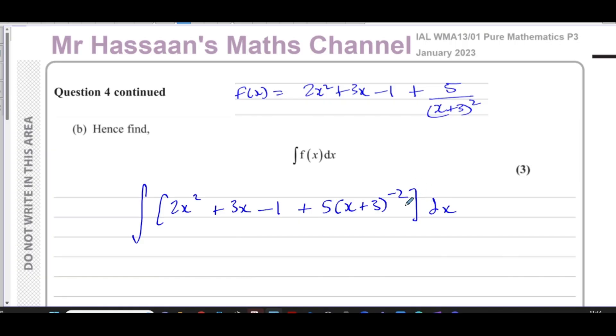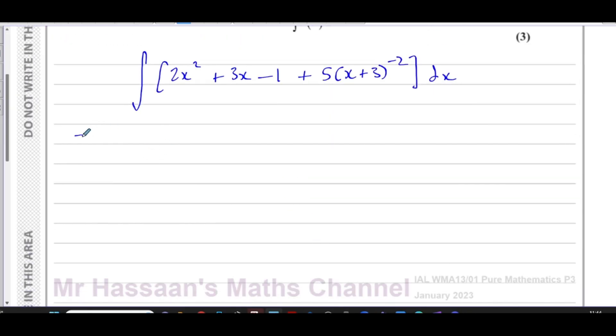Now all of these terms I can integrate. This last term can be integrated by reversing the chain rule because outside the function is something which is a constant and the differential of what's inside the function is also a constant, therefore the chain rule can be reversed. So now I'm going to integrate it. I'm going to add one to the power and divide by the new power. Same with this one. The number term will gain an x so it'll be minus x. And here I'm going to add one to the power so I have (x plus 3) to the power of negative 1, divide by the new power which is minus 1. I multiply by the differential of what's inside which is just 1 anyway. And don't forget to put the plus c.